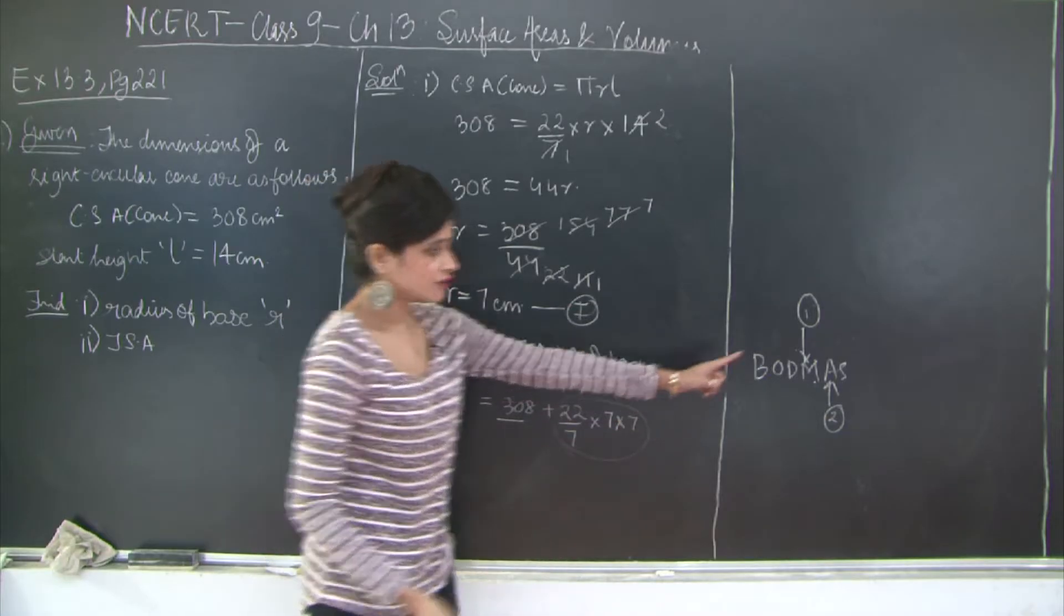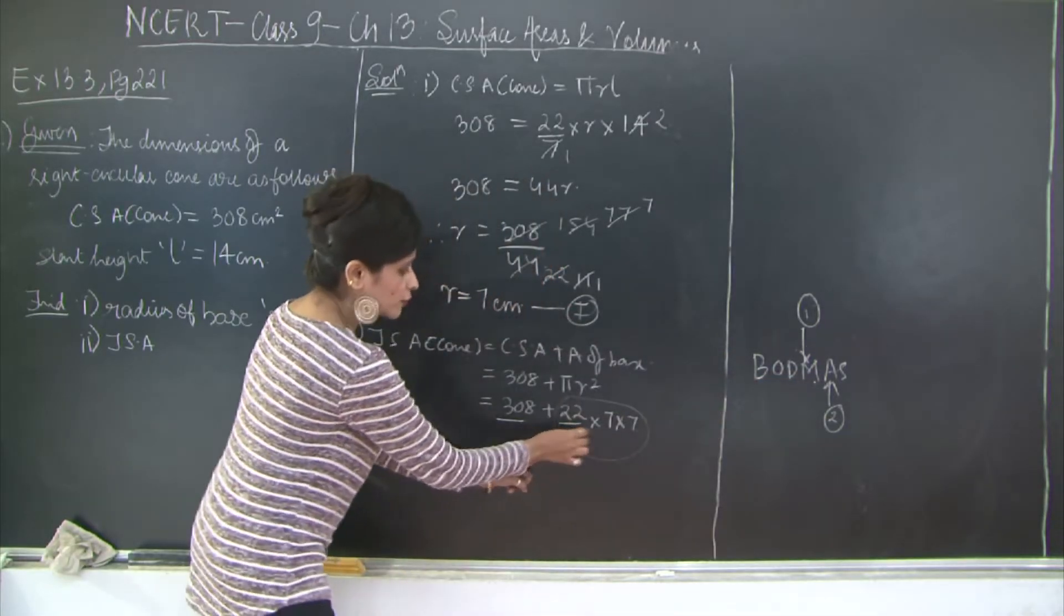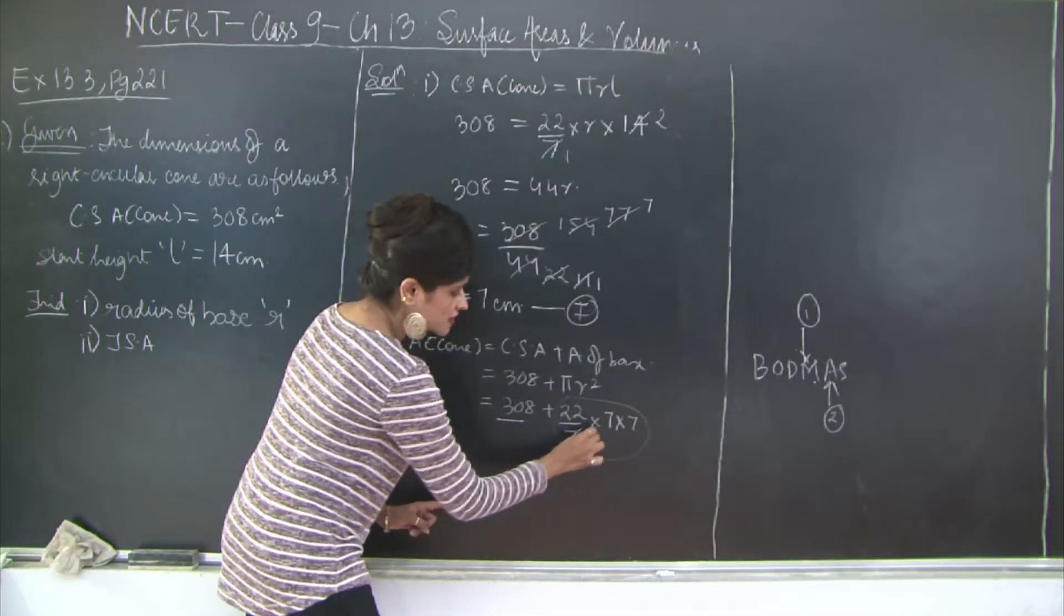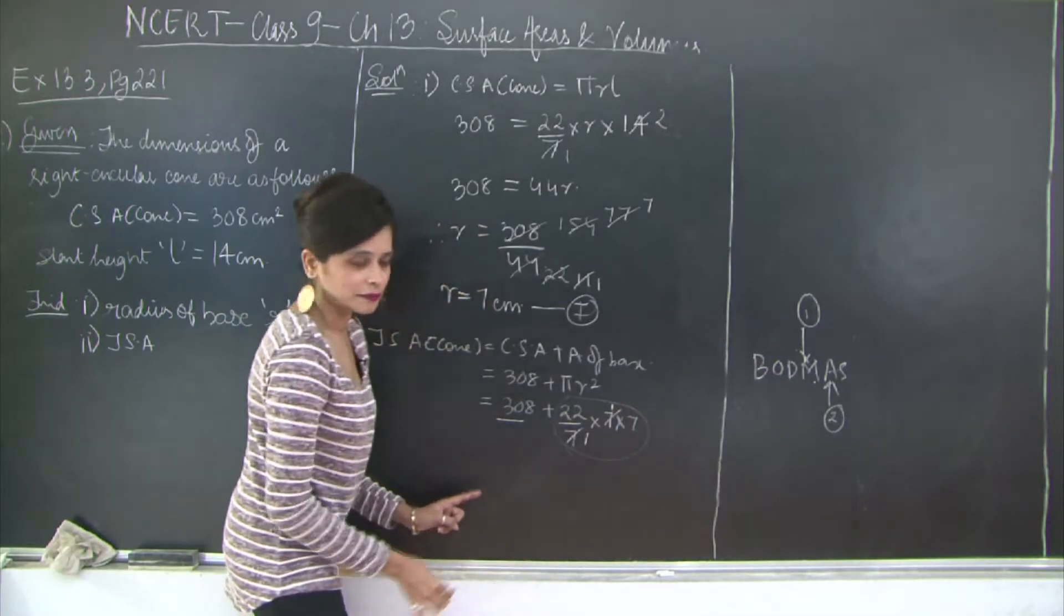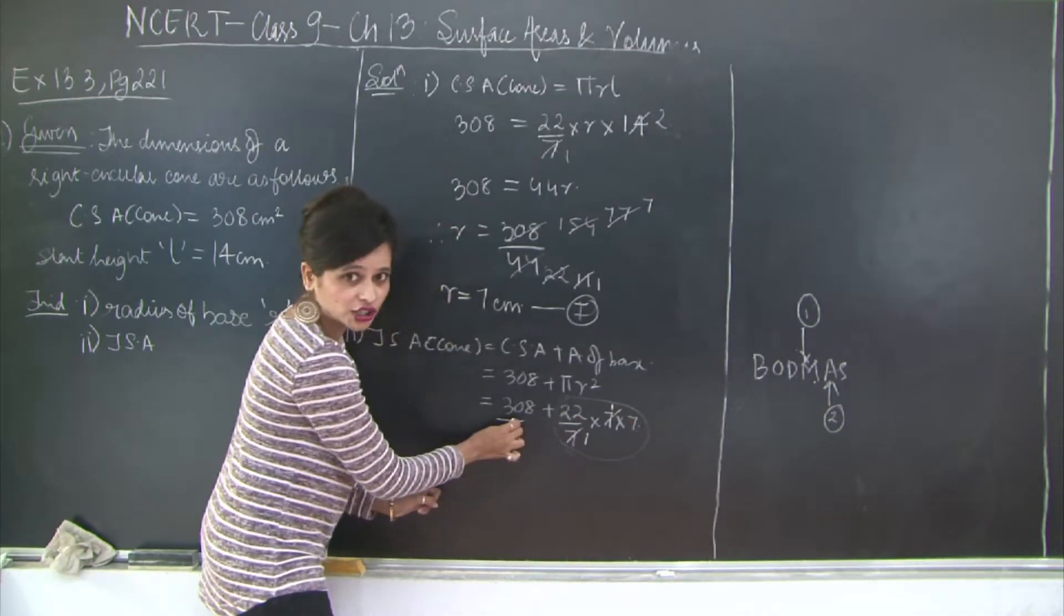And if you have division, first give priority to division and then multiplication. So I am going to first solve this term. 7 1s are 7, 7 1s are 7. So 22 into 7. Again you have this entire term which needs to be added.